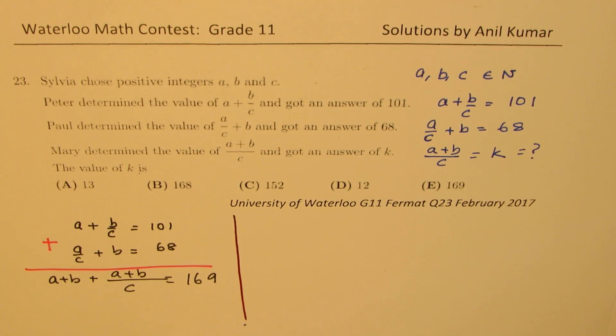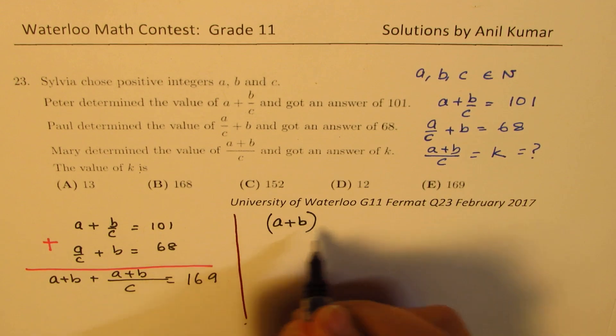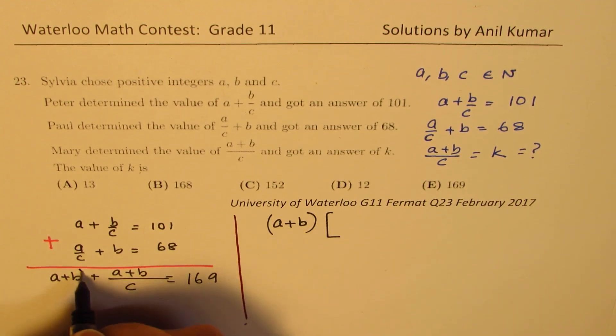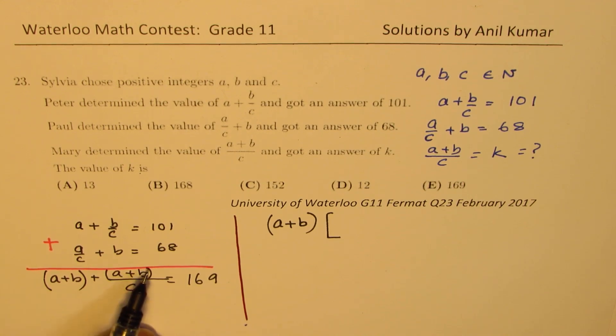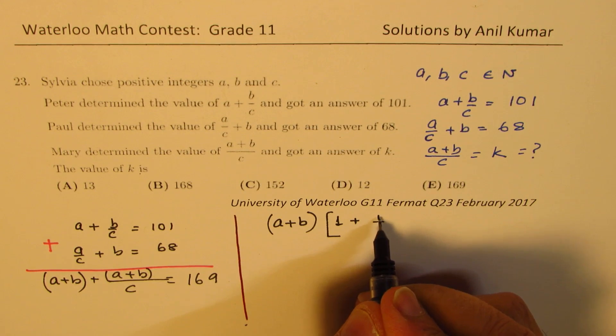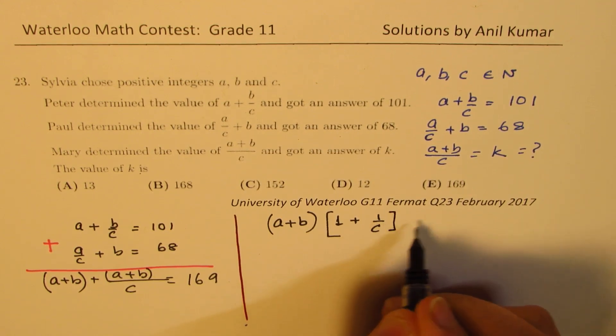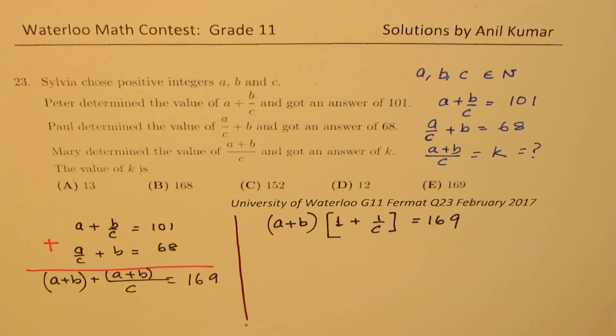Now what I will do to make it obvious is that I will factor out A plus B. If I factor out A plus B, think like this. We have A plus B plus A plus B over C equals to 169. So we are factoring A plus B. So we get 1 plus 1 over C equals to 169. We just factored this out.